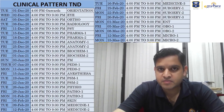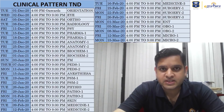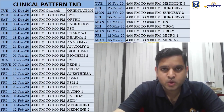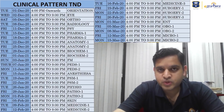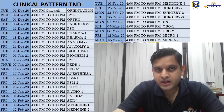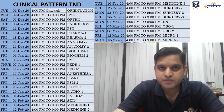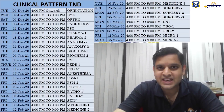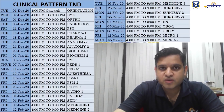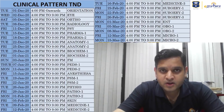This is the entire schedule of the Clinical Pattern T&D, which starts from 1st of December. All 19 subjects will be covered by 15th of March. As of today, NEET PG 2021 is supposed to be in the second week of April, so after this you will have nearly one complete month for self-reading.